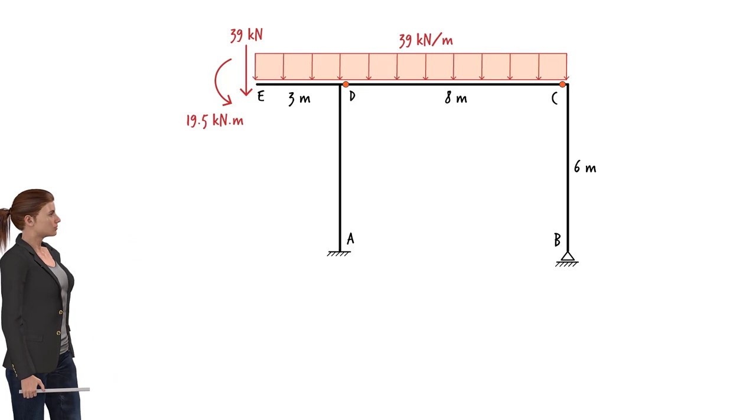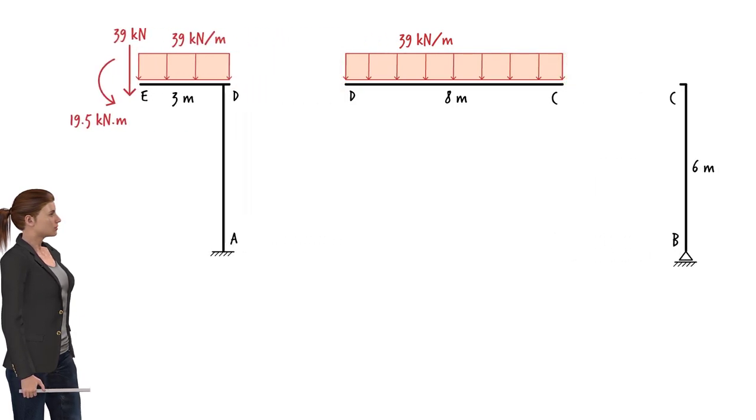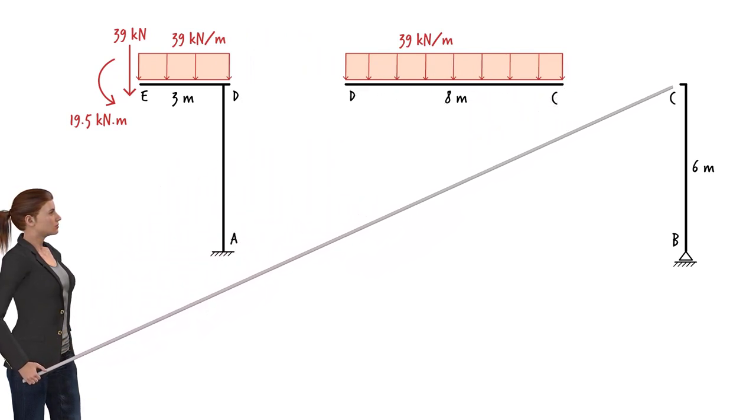To analyze the frame, we can divide it into three segments by separating the beam and columns at the two hinges, like this. Keep in mind that bending moment is zero here, here, here, and here.